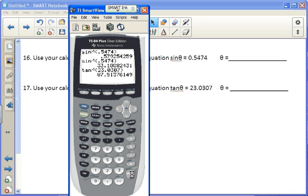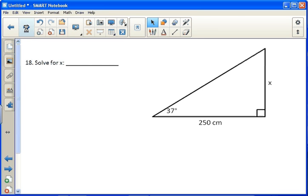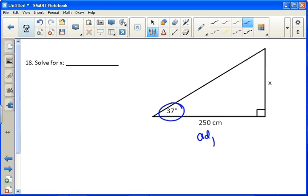Okay, 18, we're asked to solve for x. So again, pay attention to what sides you have. Given this angle, this is our adjacent side, this is our opposite side. The trig function that uses opposite adjacent is tangent, so we get tangent of 37 degrees is equal to the opposite over the adjacent.